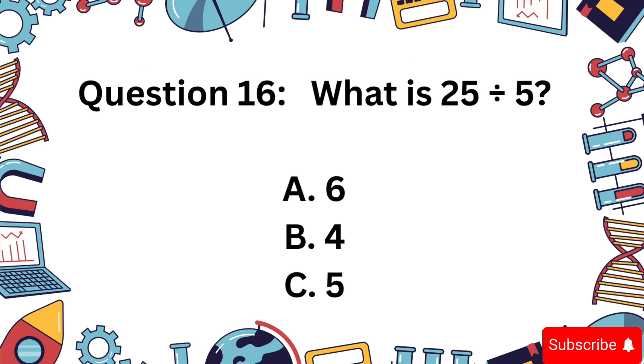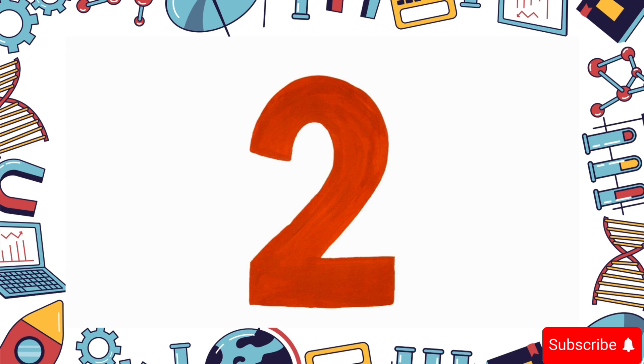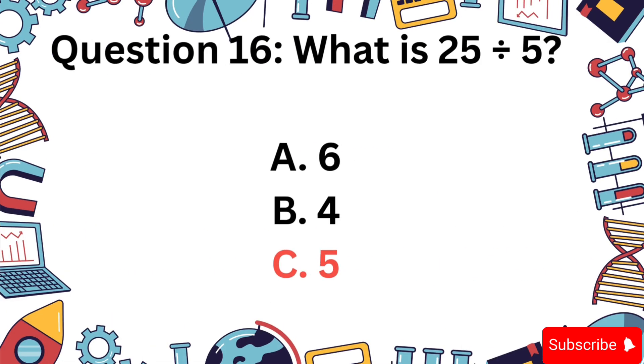25 divided by 5. A, 6, B, 4, or C, 5? Answer is C, 5.